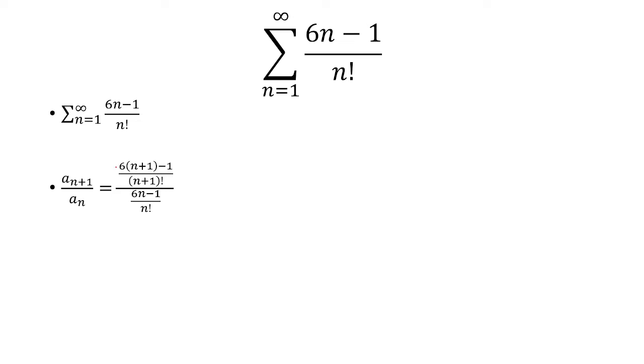Now for the numerator of the first fraction, we're going to distribute the 6 and simplify to get 6n plus 5. Everything else is going to stay the same.